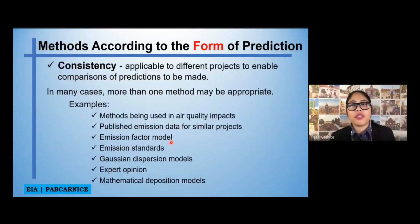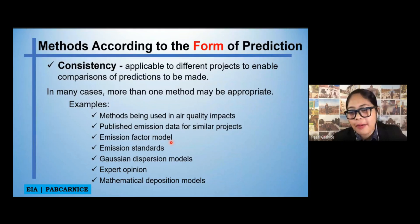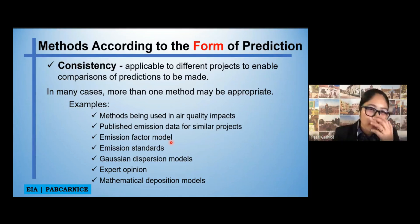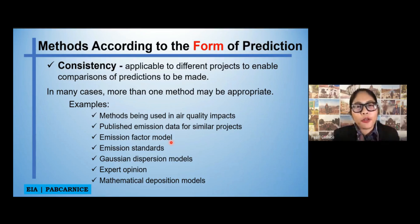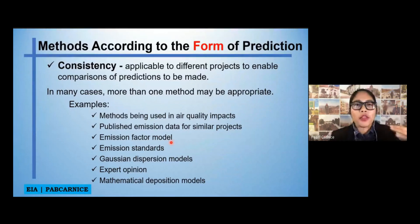One of the things we have to consider in impact prediction is consistency — applicable to different projects to enable comparisons of predictions to be made. For example, on water quality, if you identified total nitrogen in your baseline study, after five years you have to analyze total nitrogen of the water and not extractable nitrogen. During the monitoring and auditing, you have to quantify total nitrogen. There is a huge difference between total nitrogen and extractable nitrogen.